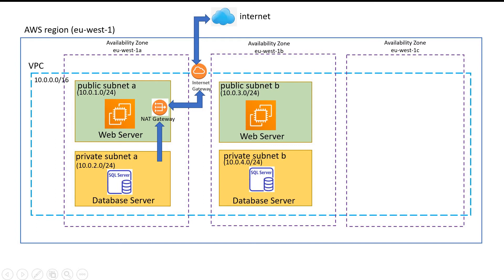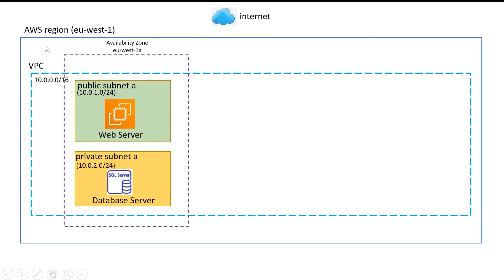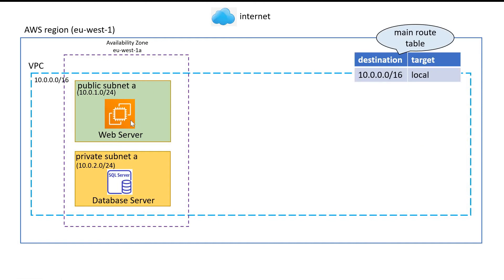Here is a scaled-down version of the previous slide. We have an AWS region, and inside the region we have one VPC with a public subnet and a private subnet. In the public subnet we have hosted our web server, and in the private subnet we have our database server. Whenever we create a VPC in AWS, a default route table is also created with the VPC, called the main route table. A route table contains a set of rules called routes that determine where network traffic from your subnet or gateway is directed.